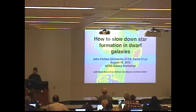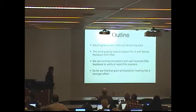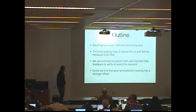So let me just start by telling you what I'm going to tell you. Dwarf galaxies are inefficient at forming stars, and I think it's fair to say the most popular way to explain this is with strong feedback from supernovae. We're running simulations with well-resolved supernova feedback to try to verify or reject the scenario. But the twist is that so far we find that grain photoelectric heating has a much stronger effect.